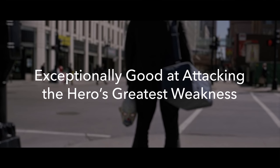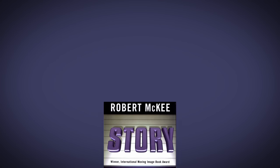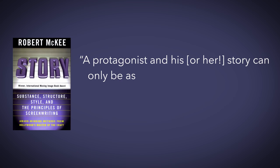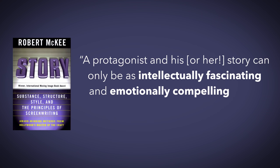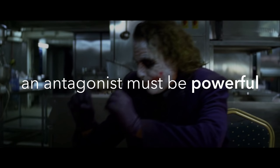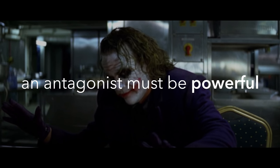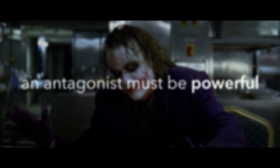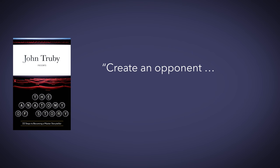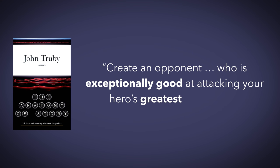Exceptionally good at attacking the hero's greatest weakness. Let's begin with a quote from Robert McKee's Story: 'A protagonist and his story can only be as intellectually fascinating and emotionally compelling as the forces of antagonism make them.' So an antagonist must be powerful. The more powerful, the harder the struggle for a hero, and the harder the struggle, the more compelling the story. But that's a little vague. What does powerful mean in this context? John Truby has a good piece of advice about how to make the antagonist powerful in a specific way.